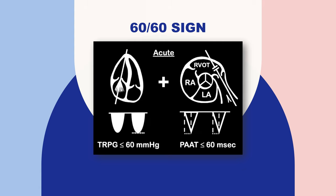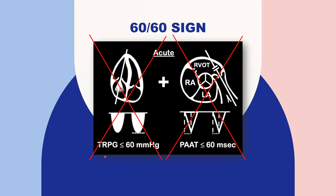A commonly discussed sign is the 60-60 sign, which looks for acute elevations in pulmonary pressures. It combines a tricuspid regurgitant pressure gradient of less than 60 mmHg and a pulmonary artery acceleration time of less than 60 milliseconds. Our patient had neither — she had an elevated TR pressure gradient greater than 60 and a pulmonary artery acceleration time greater than 60 milliseconds — suggesting her pressure increase was not acute.